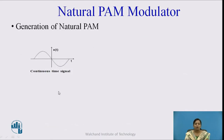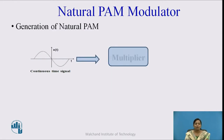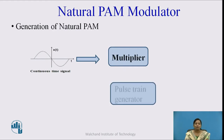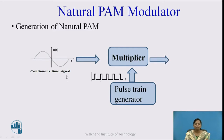We will see the block diagram of PAM modulator. In the PAM modulator, the continuous time signal is given to the multiplier. The other input to the multiplier is the train of pulses. The amplitude and frequency of the train of pulses is adjusted according to the sampling theorem. At the output of the multiplier, we get a PAM signal.